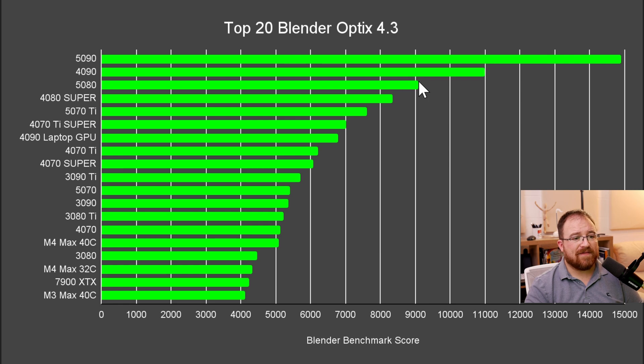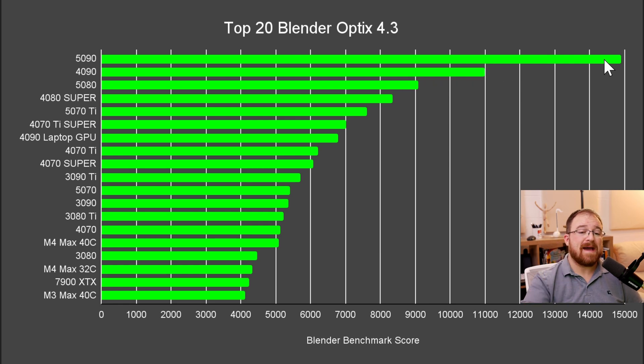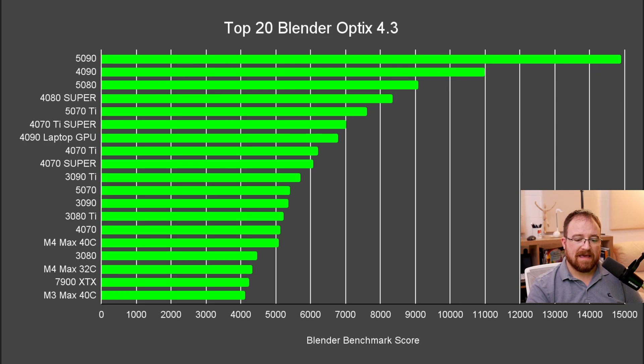But after that, things start to get a bit more ballistic. We do get massive jumps, and I've put the 5090 here at sub-15,000.